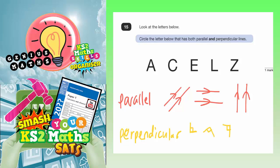Well the first thing we need to do is understand the meaning of the words parallel and perpendicular. So I've done some examples here. Parallel lines are basically lines which are pointing in the same direction and would not touch if the lines were continued.